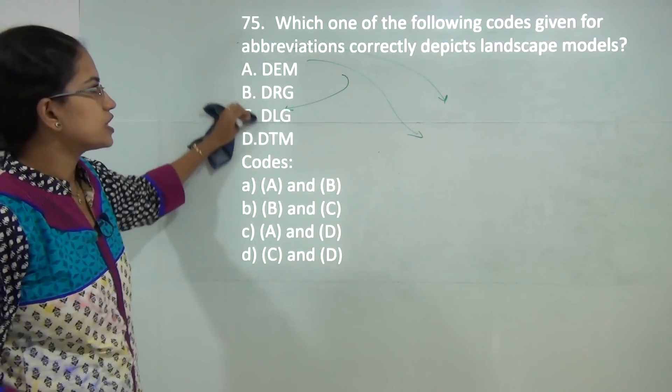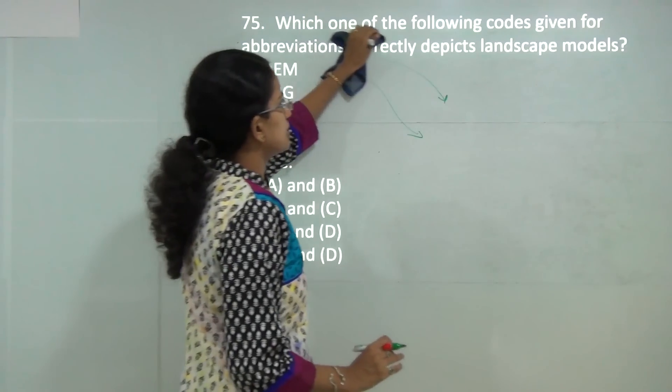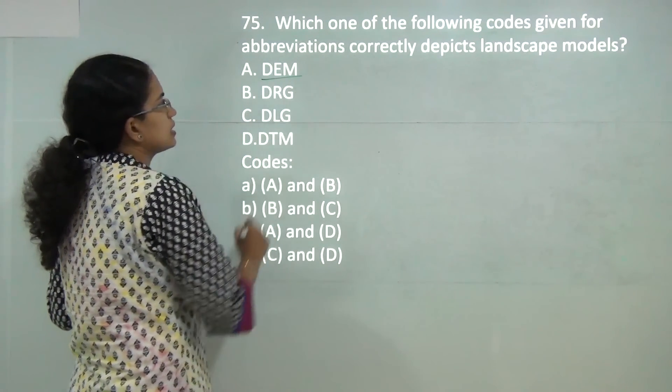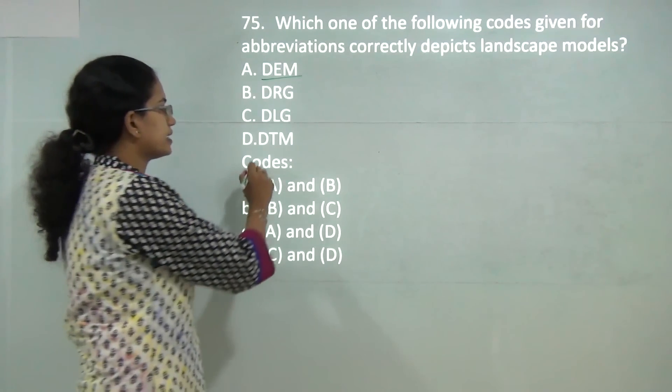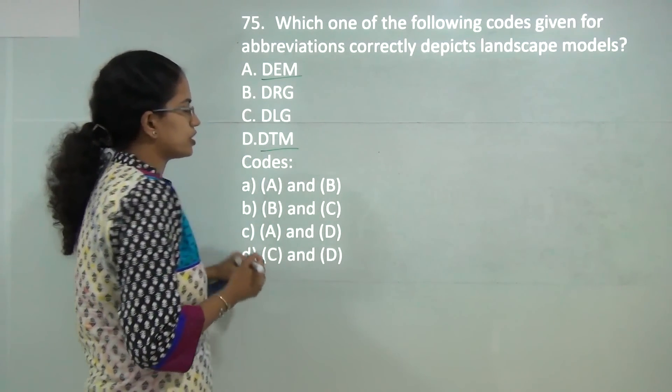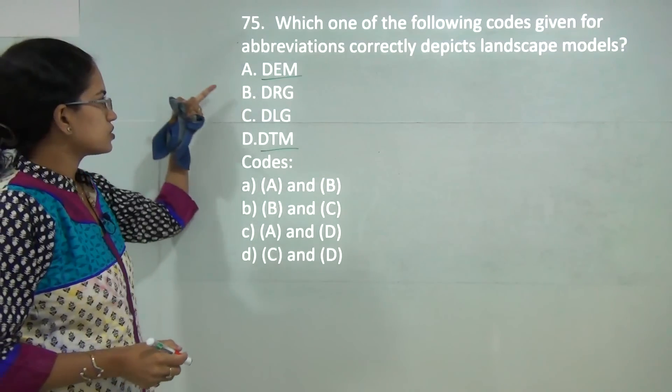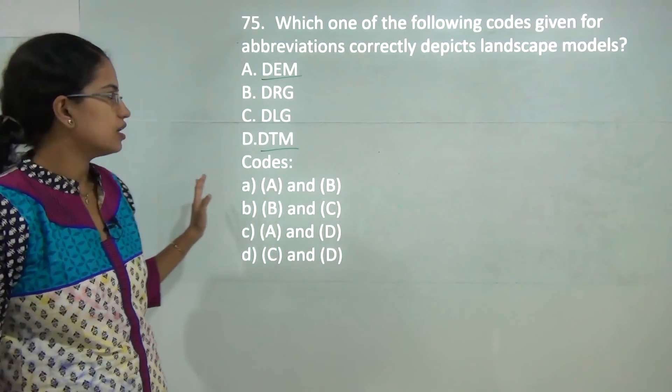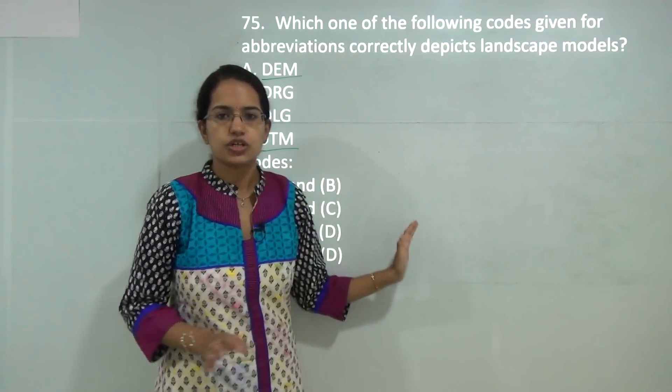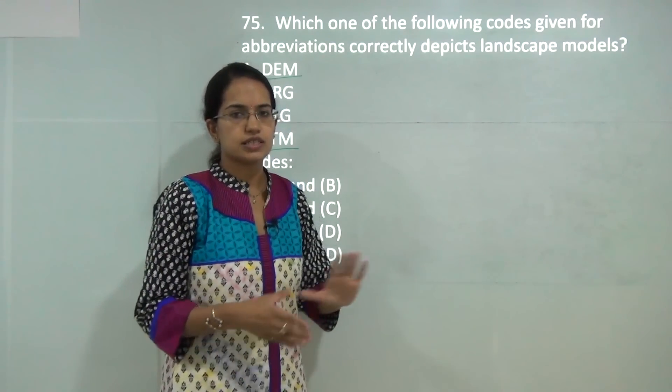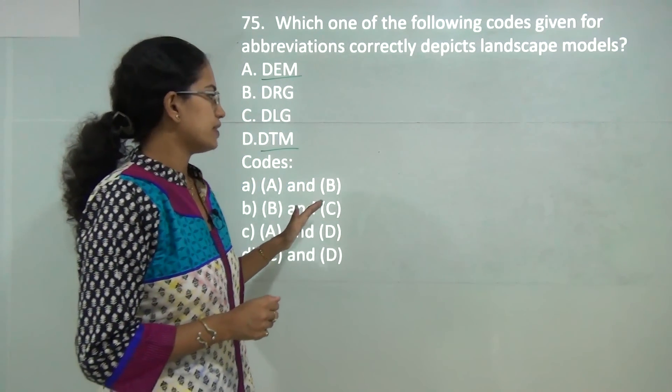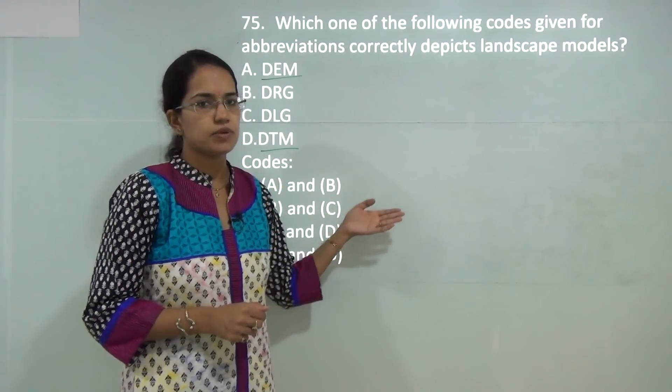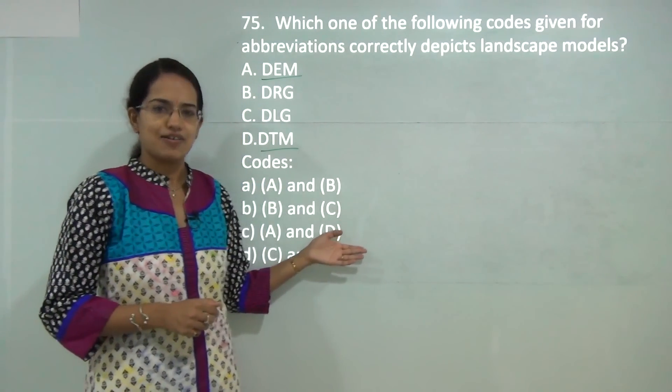Which codes give abbreviations correctly depicting the landscape model? Out of these, you have DEM, which is Digital Elevation Model, and DTM, which is Digital Terrain Model, and both of these explain the landscape. So the answer should be A and D, that's C. With this, we cover the final set of geography papers. We have discussed finally both Paper 2 and 3. If you have any doubts or any questions regarding the papers we have discussed, you can leave those as comment below. We will be more than happy to answer those. Have a good day ahead.